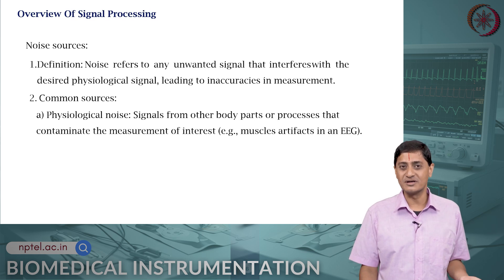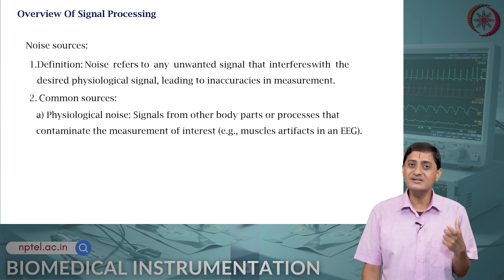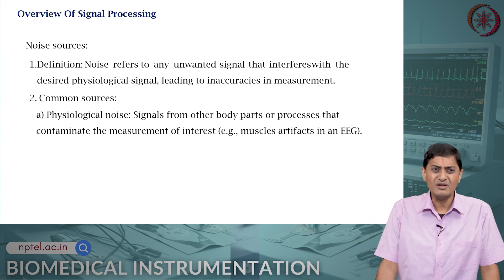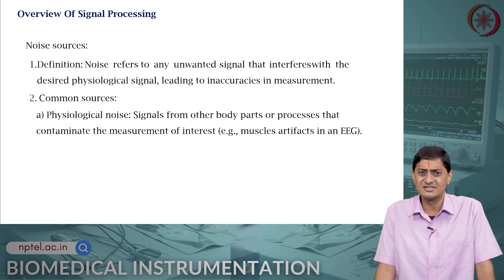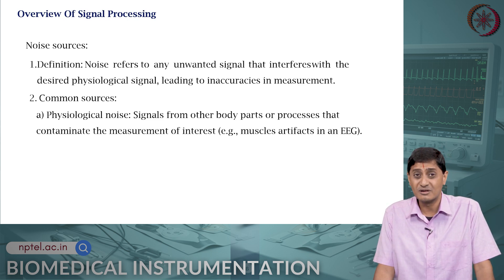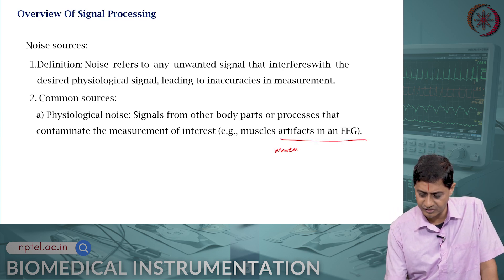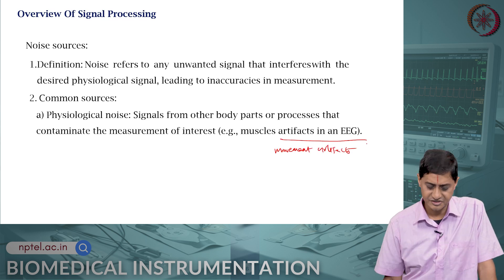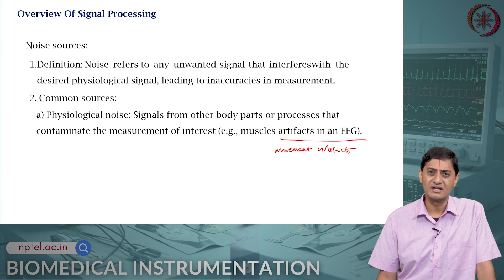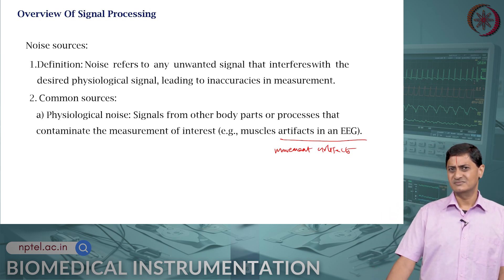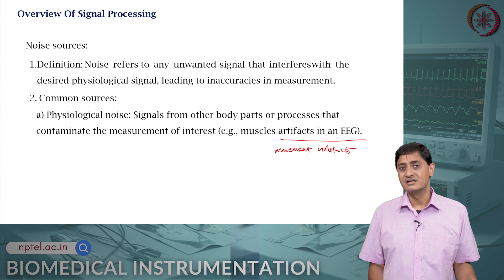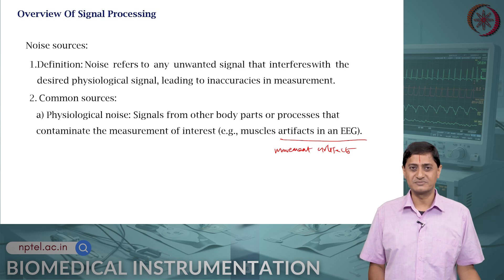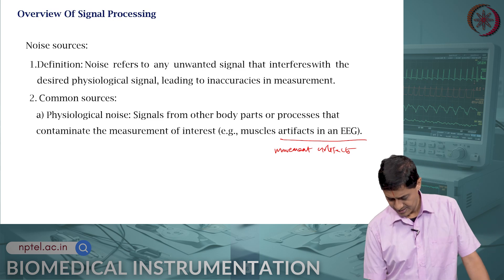When you are measuring ECG, muscle signal is noise, and when you are measuring muscle signal, muscle signal is signal. Common sources of physiological noise include signals from other parts of the body. Muscle movements or movements usually cause motion artifacts in ECG, which are very difficult to remove. Because the measurement of interest — say brain activity — and muscle or movement artifacts fall in the same frequency range, you cannot use simple filtering techniques to remove them. You need advanced signal processing approaches.